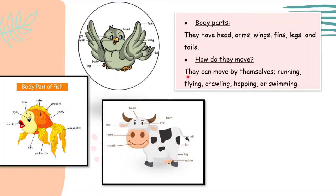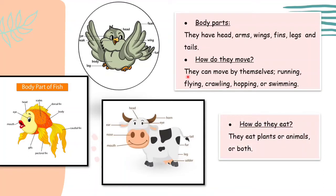Animals can move by themselves — they can run, fly, roll, hop, or swim. How do they eat? They cannot make their own food, so they eat plants, or animals, or can eat both.